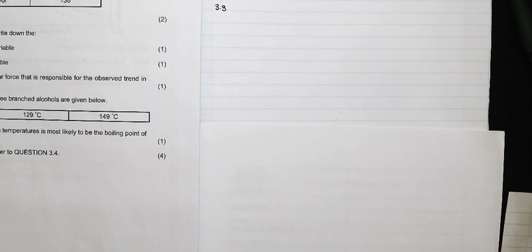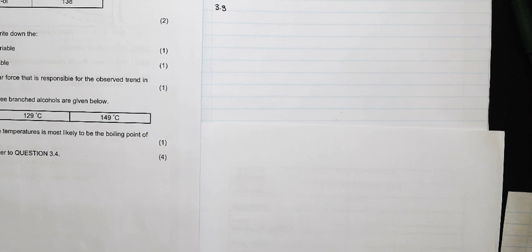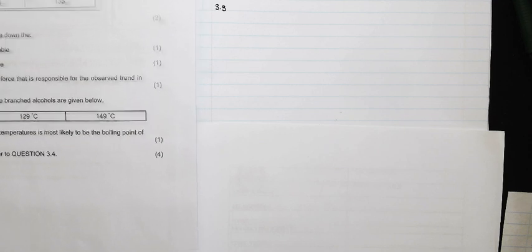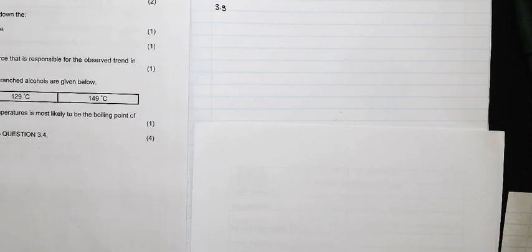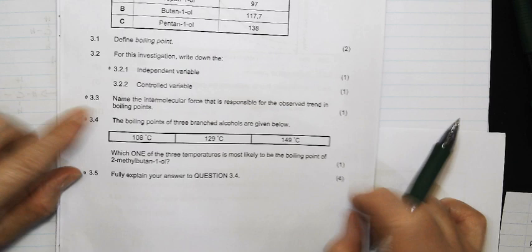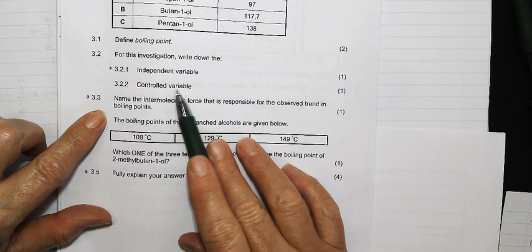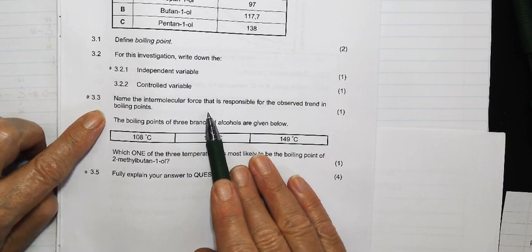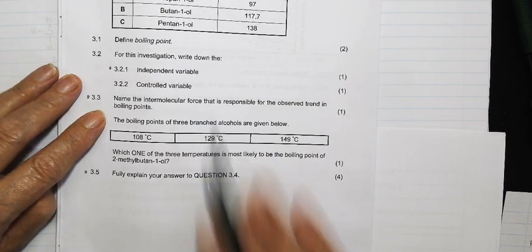In this video I'd like to answer questions 3.3 to 3.5 in the grade 12 paper 2 September 2023. The first question 3.3 asks for the name of the intermolecular force that is responsible for the observed trend in the boiling points.